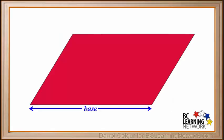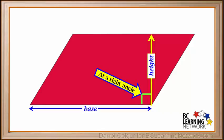In a parallelogram made from this rectangle, the base is also the distance across the bottom. And the height is also measured by drawing a line from the base to the top. And this line must be at right angles to the base, as shown here.